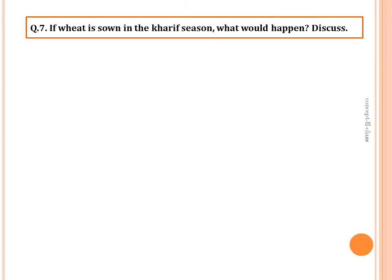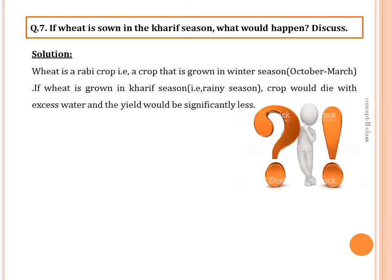Question seven: if wheat is sown in the kharif season, what would happen? Wheat is a rabi crop grown in winter, from October to March. If wheat is grown in the kharif season, that is the rainy season, the crops would die due to excess water and the yield would be significantly less. It is not possible to grow wheat in the kharif season.